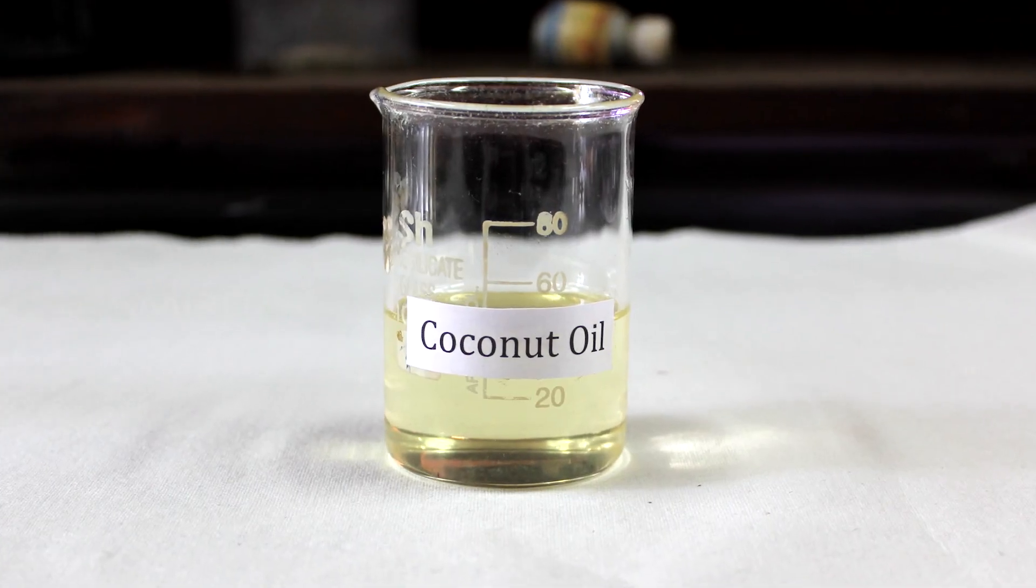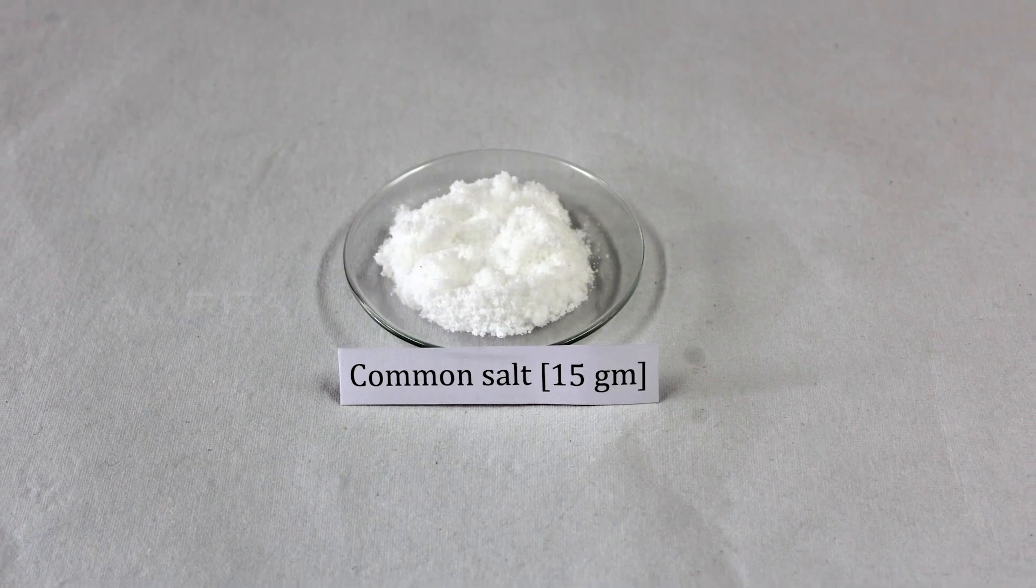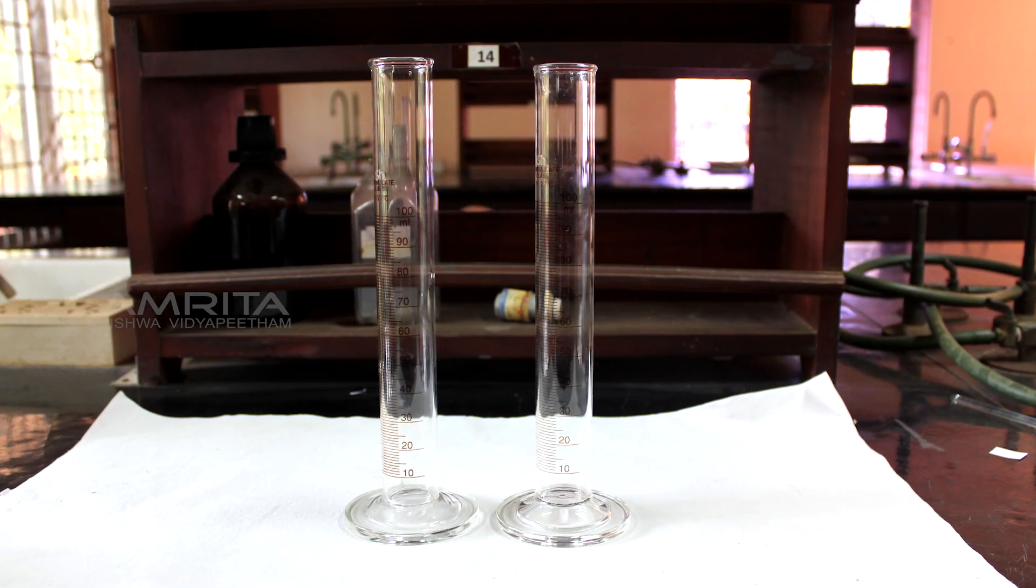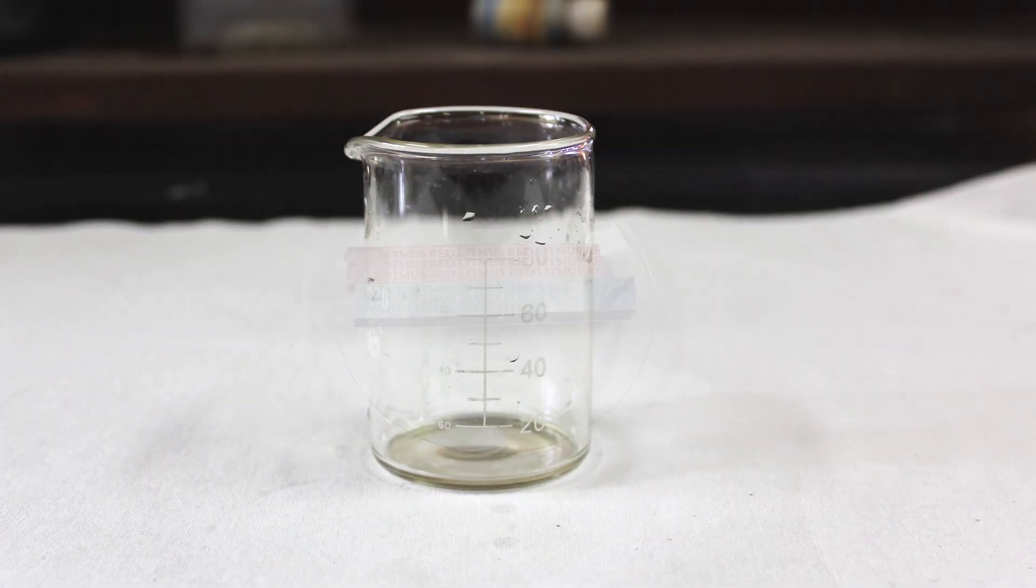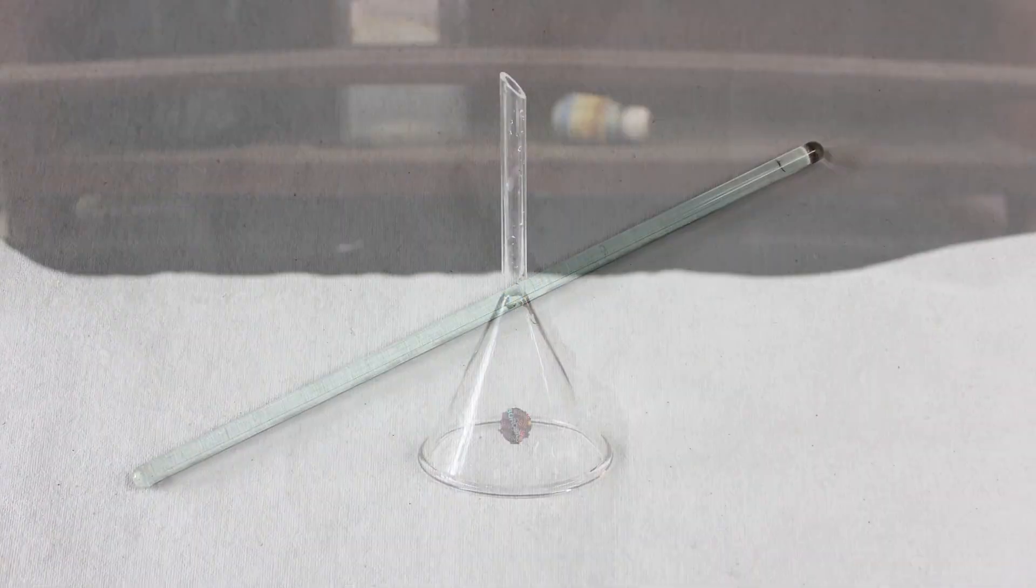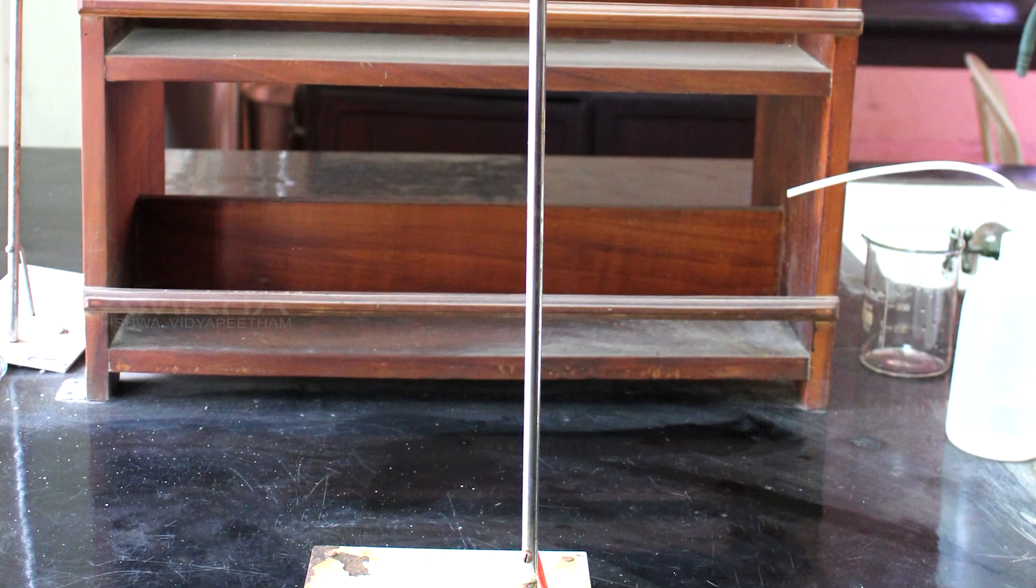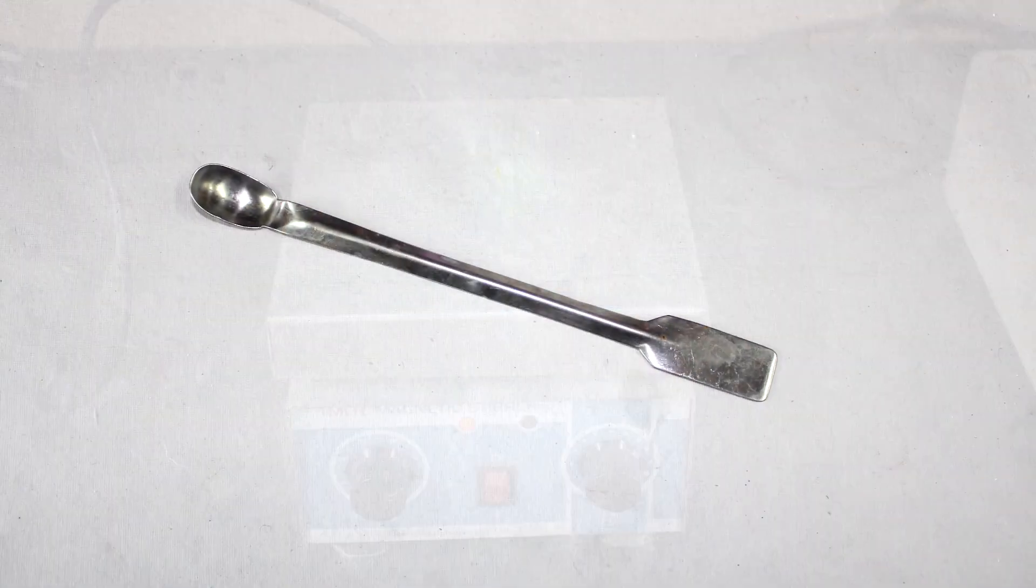Materials Required: Coconut oil, 20% sodium hydroxide solution, common salt, measuring cylinders, beakers, blue and red litmus papers, glass rods, filter funnel, filter paper, iron stand, hot plate and a spatula.